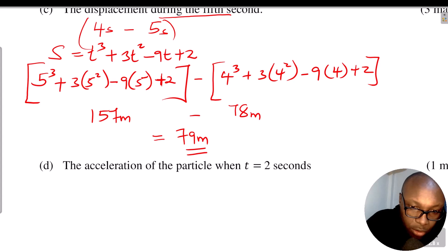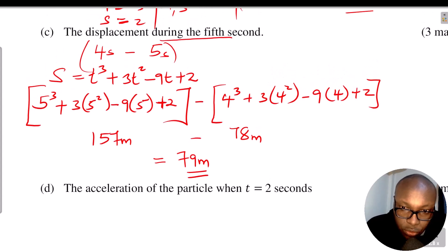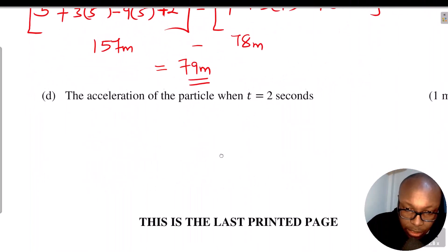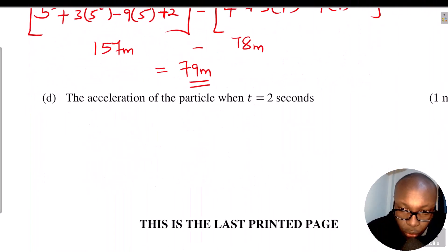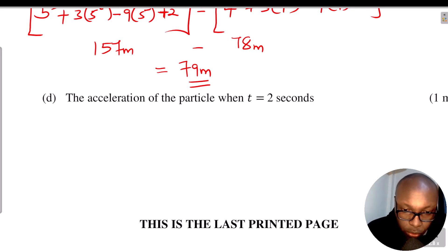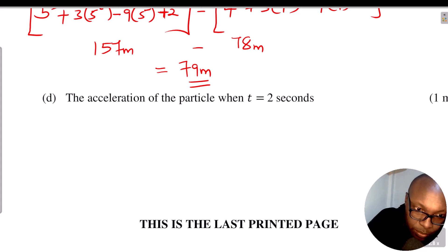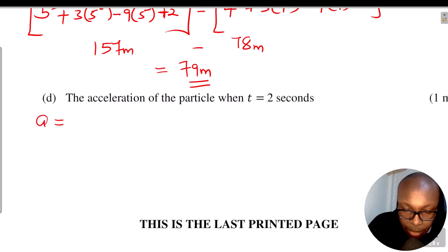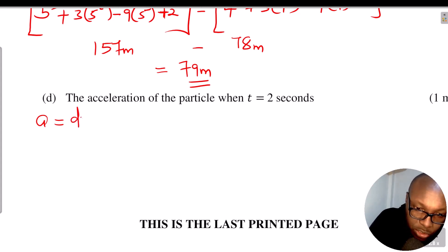So 79 meters represents the displacement during the fifth second. Now for the last part: the acceleration of the particle when t = 2 seconds. To get acceleration, we differentiate velocity with respect to t.